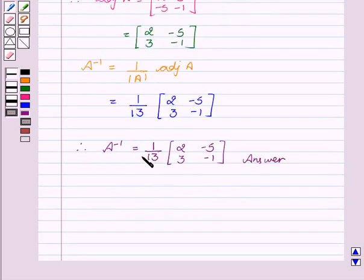So A inverse equals 1/13 times matrix [2, -5; 3, -1], which is the required answer. Hope you understood the solution and enjoyed the session. Goodbye and take care.